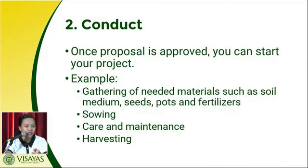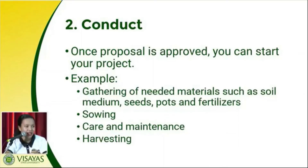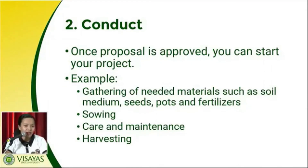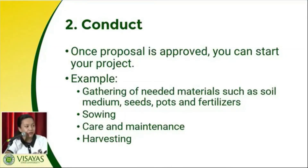Once you have your seeds, pots, and soil medium, you can start sowing the seeds. After that, care and maintenance — if there is a need to water your plants, apply all those management practices. If you observe pests or insects on your plants, remove them. Pesticides or manual picking is advised if there is lesser damage to plants.